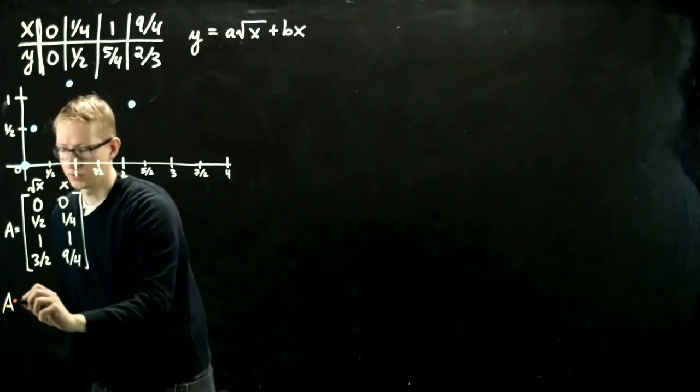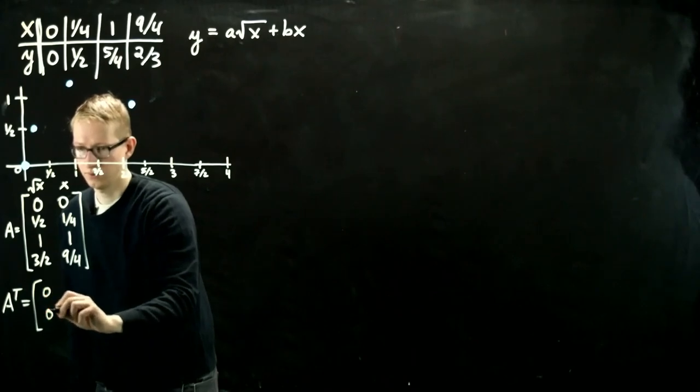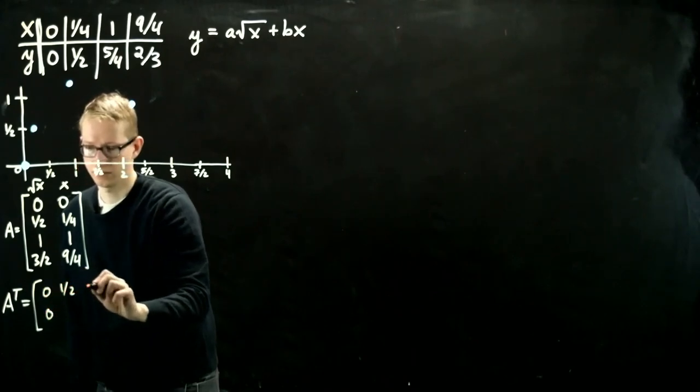Now let me also write A transpose just so we have it here, so it will be easier to compute. So we have 0, 0, 1 half, 1, 3 halves.